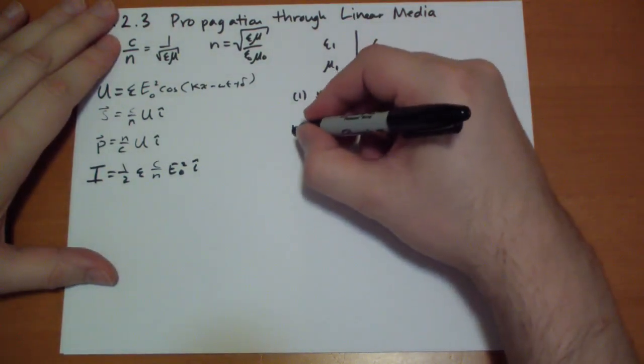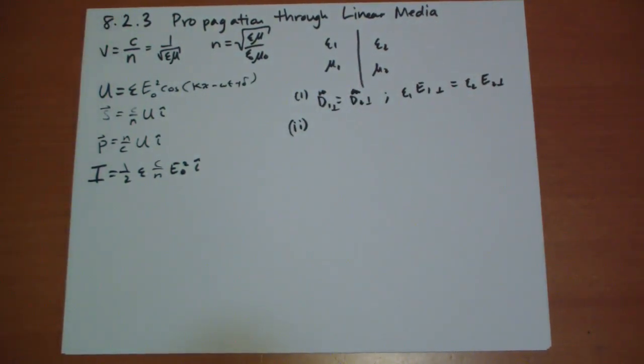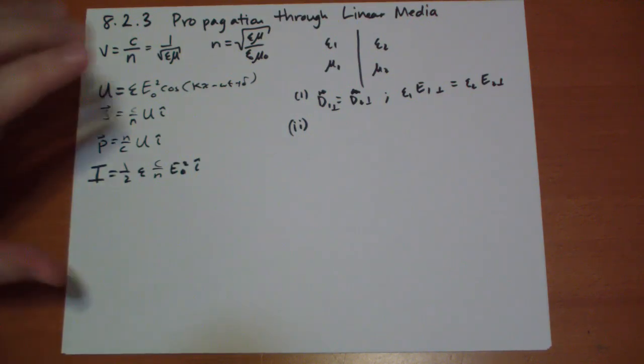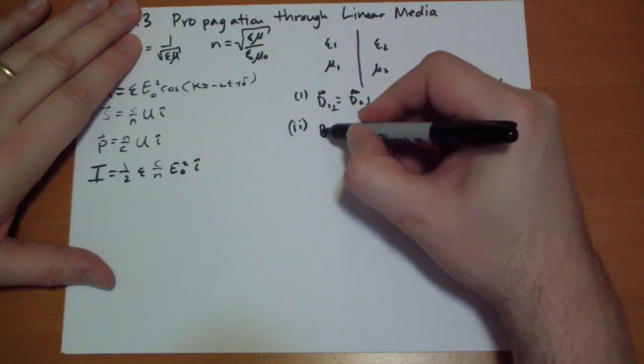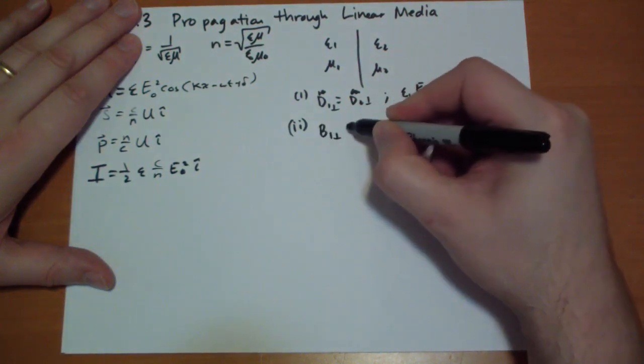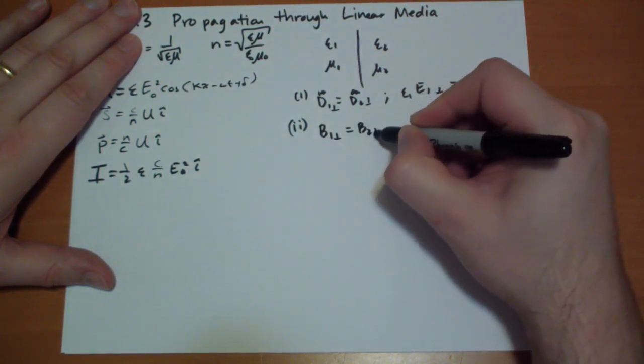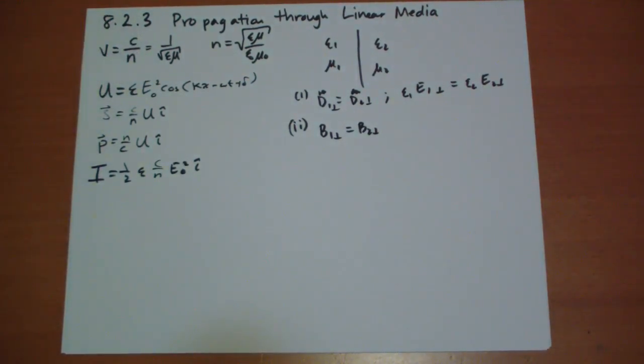The second rule that we derived is what happens for the perpendicular components of the B field. Well, there's no magnetic monopoles, so the magnetic field, the divergence of B is zero. So basically, there's no monopole charge inside of the Gaussian box that we draw off the magnetic fields. And so the B field that's perpendicular to that surface must be zero.